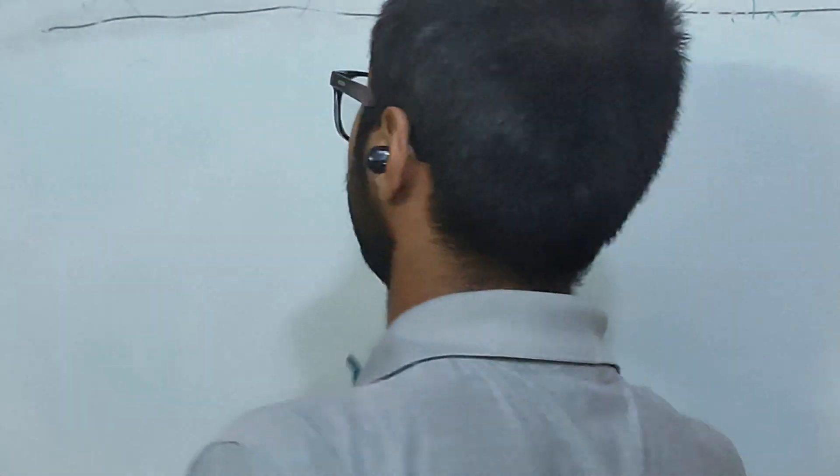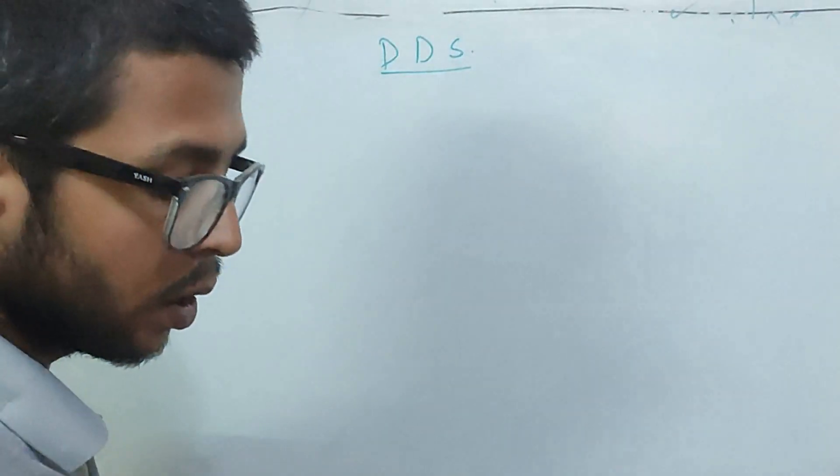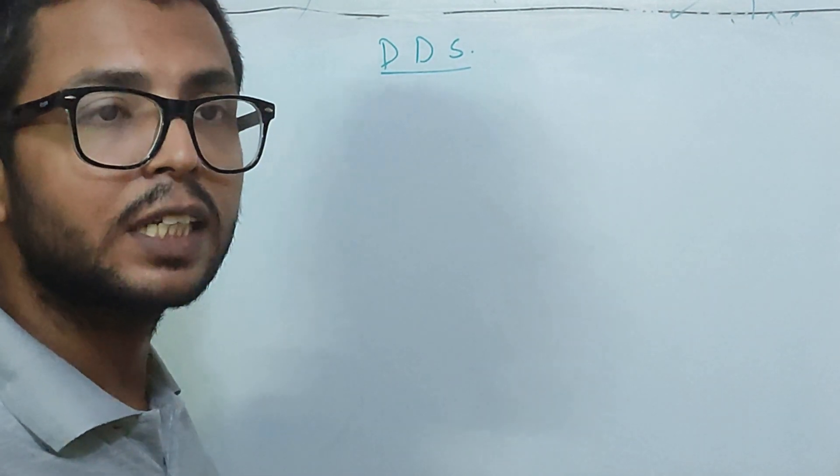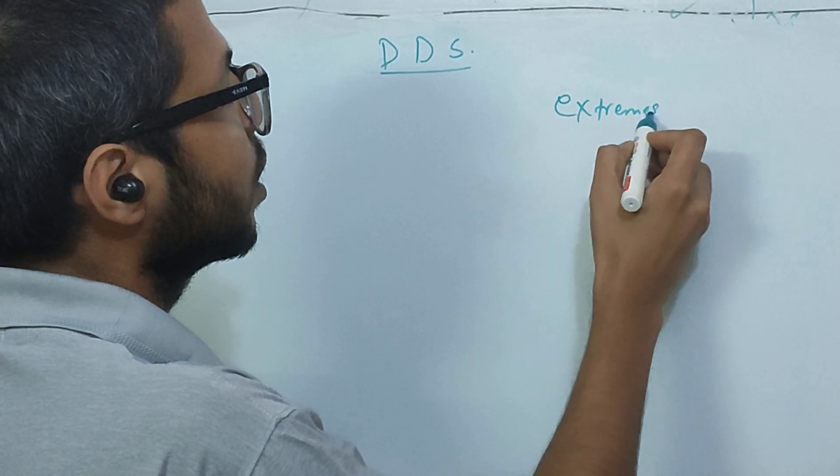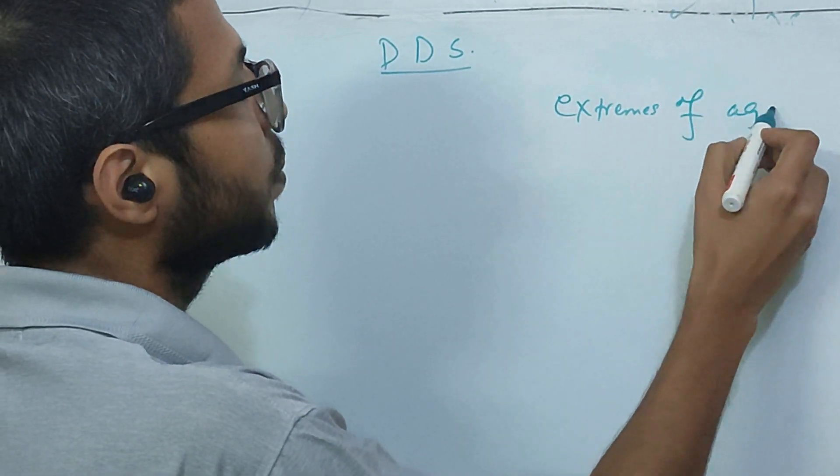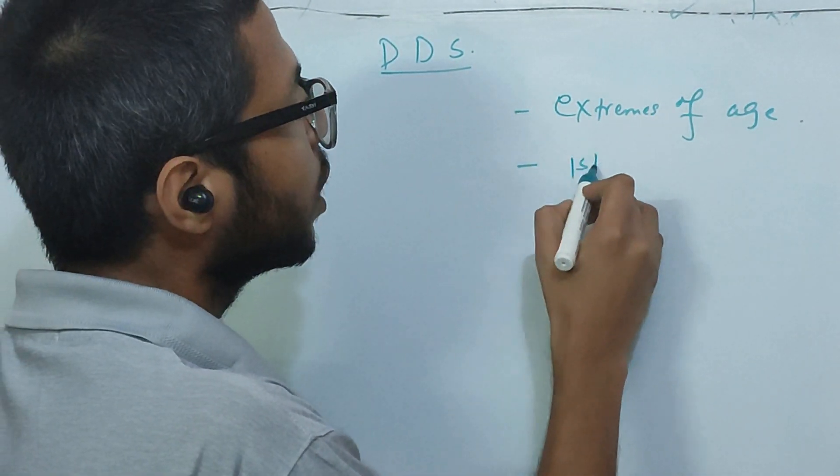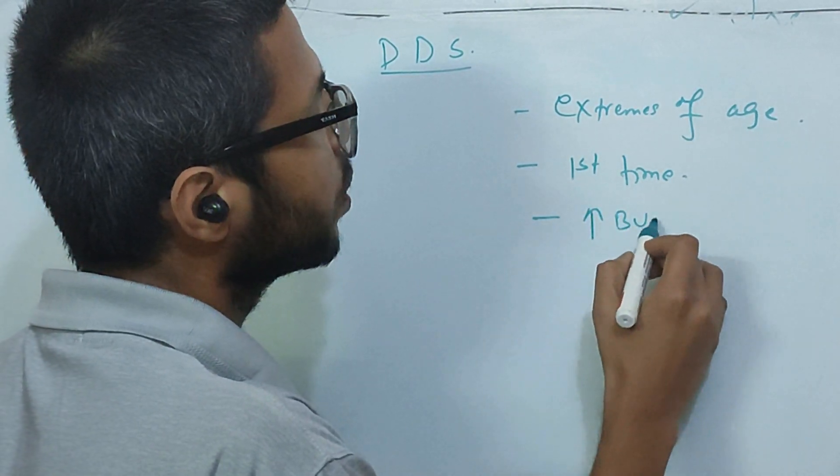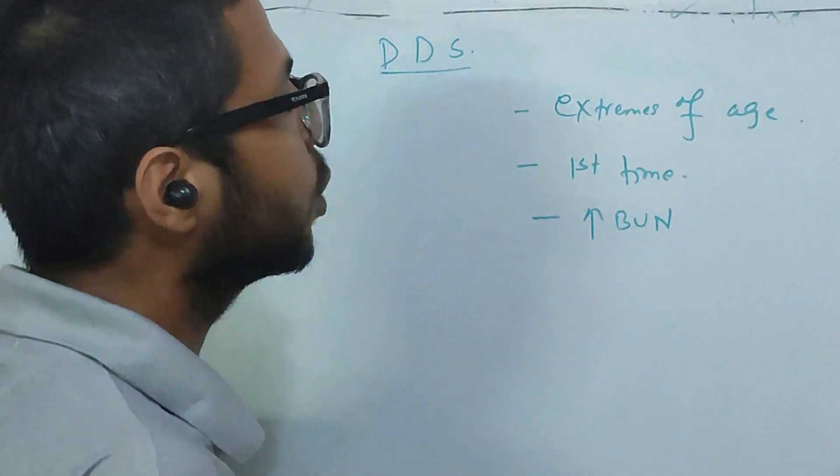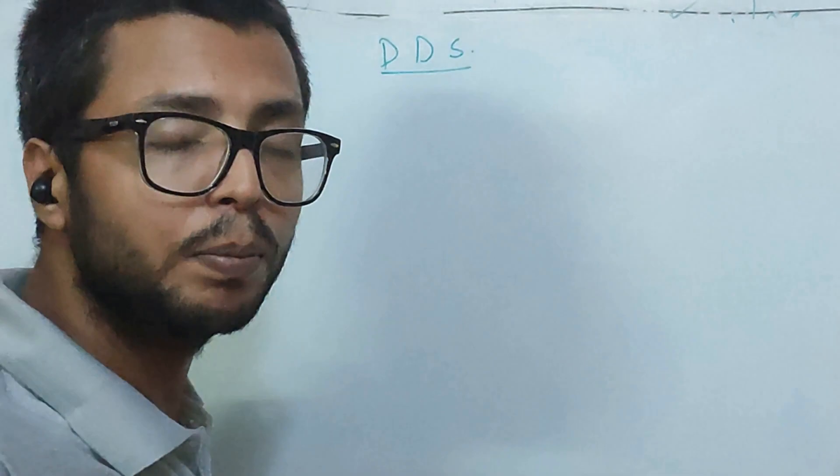Today we will be talking on dialysis disequilibrium syndrome. Which patients are at risk of dialysis disequilibrium syndrome? Patients who are at extremes of age, such as children, or those going for first-time hemodialysis, and who have high concentration of urea in their blood. These groups of patients are at high risk of developing DDS.